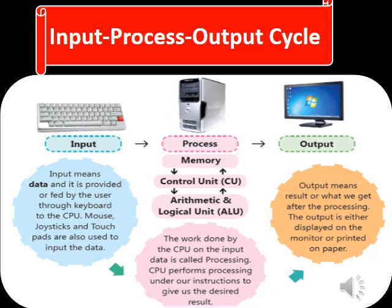What is process? The components involved are memory, control unit, and arithmetic and logical unit. The work done by the CPU on the input data is called processing. CPU performs processing under our instructions to give us the desired result. What is output? Output means result — what we get after the processing. The output is either displayed on the monitor or printed on paper.